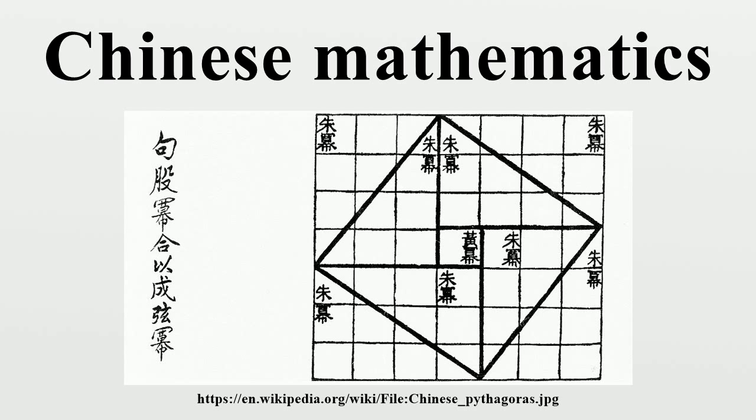The Nine Chapters on the Mathematical Art is a Chinese mathematics book, its oldest archaeological date being 179 AD, but perhaps as early as 300-200 BC. Although the authors are unknown, they made a huge contribution in the Eastern world.